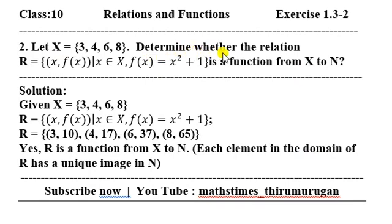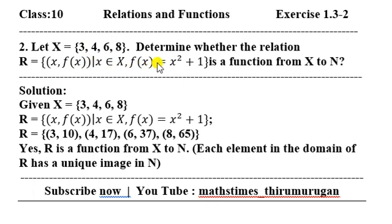Determine whether the relation R, equal to the set of ordered pairs (x, f(x)) such that x belongs to X — where X is the capital X — and f(x) is the equation f(x) = x² + 1, is a function from X to N.